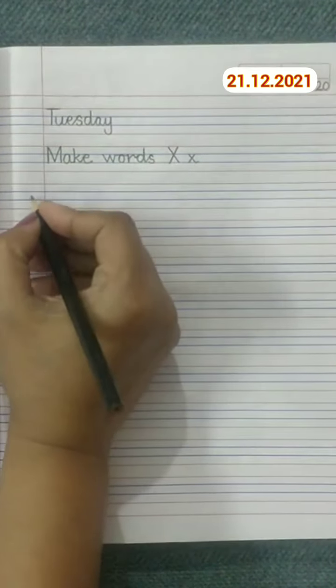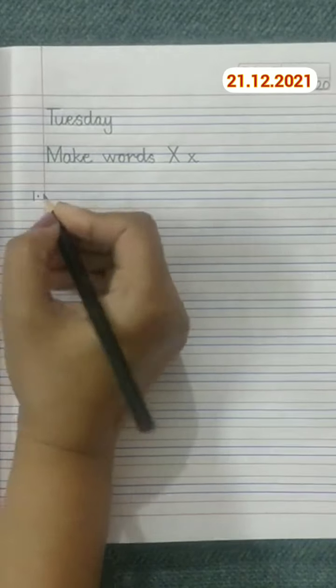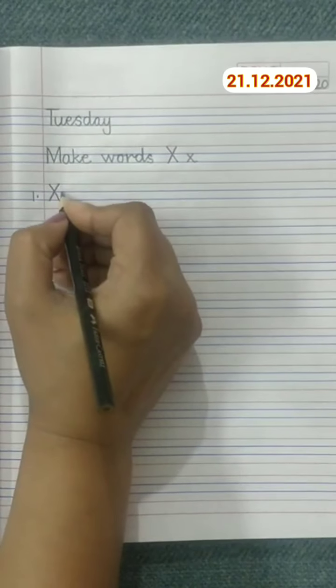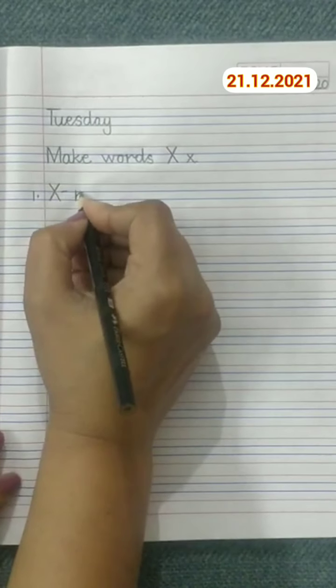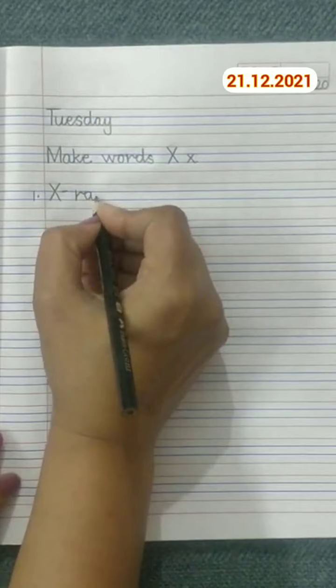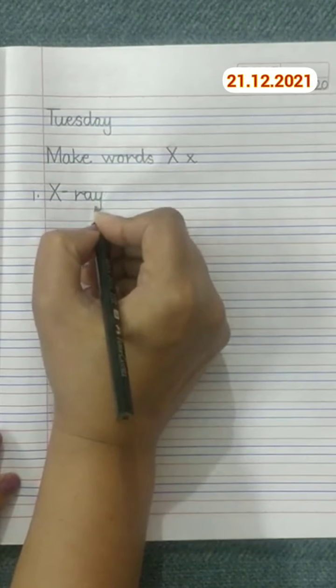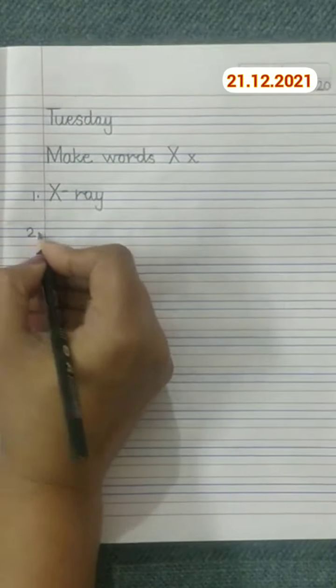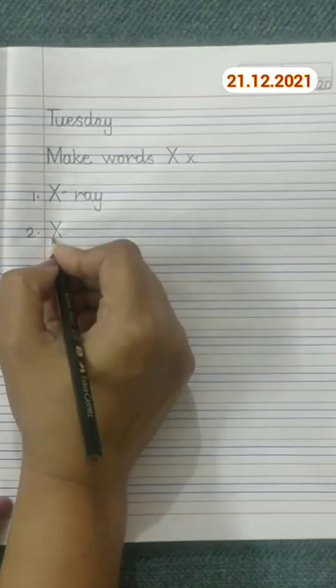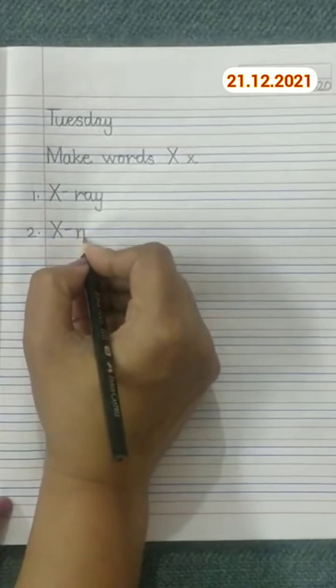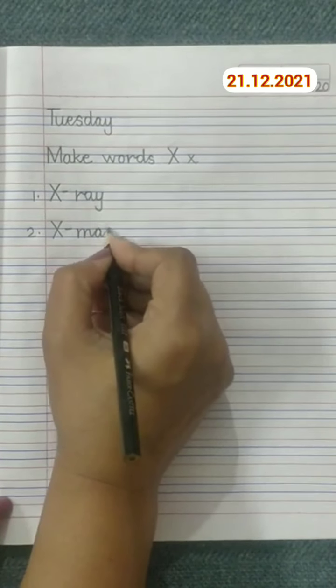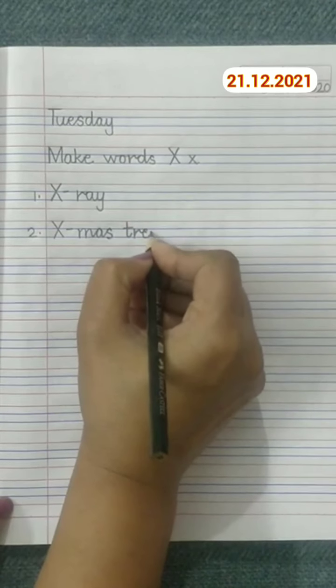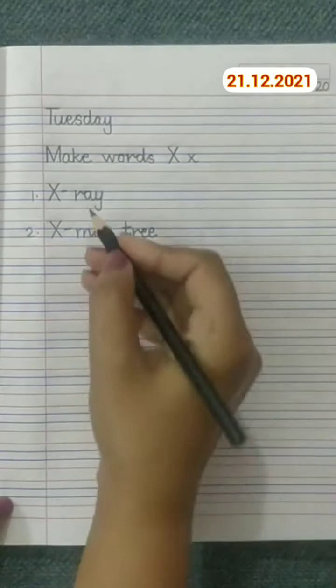Write down number 1: here we will write X-ray. Well done, X-ray. Number 2: X-mas tree. These